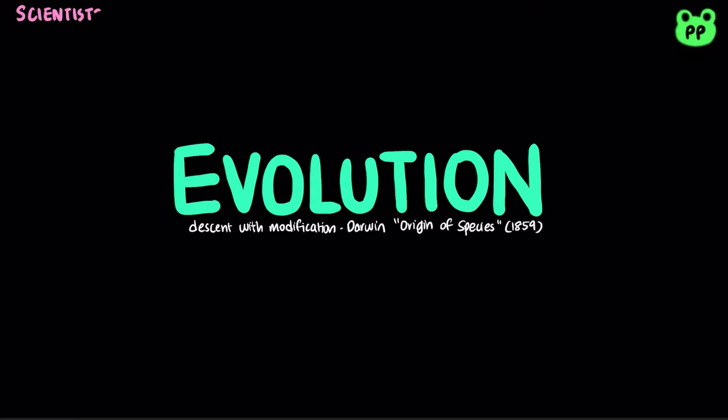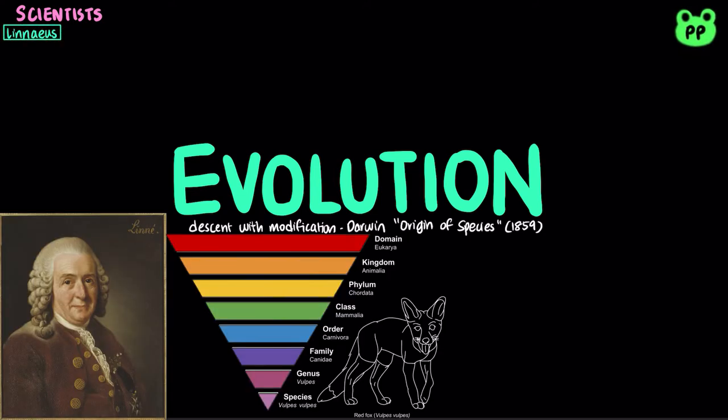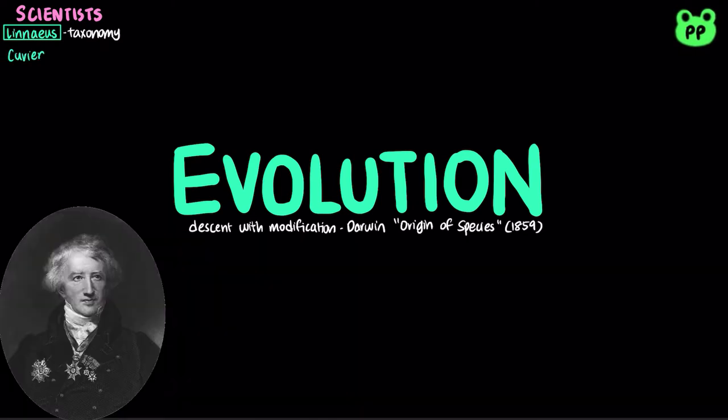Several scientists and intellectuals had an impact on Darwin's theory. Linnaeus was the founder of taxonomy, the branch of biology concerned with classifying organisms. Cuvier was the founder of paleontology, or the study of fossils, which helped to lay the groundwork for Darwin's ideas.